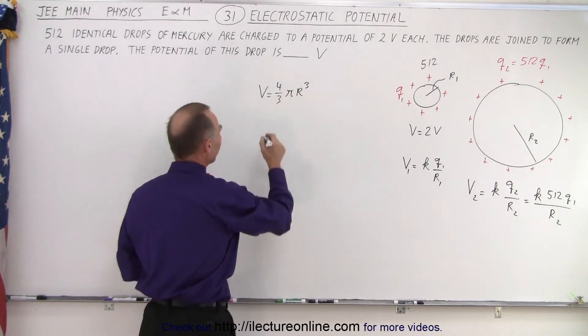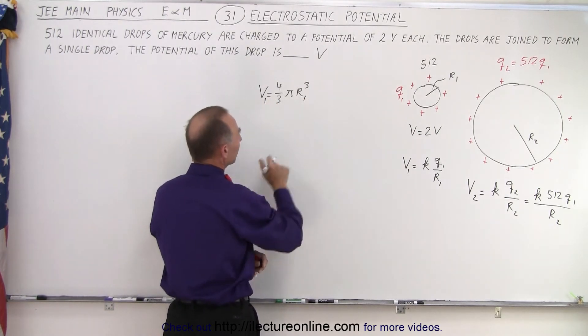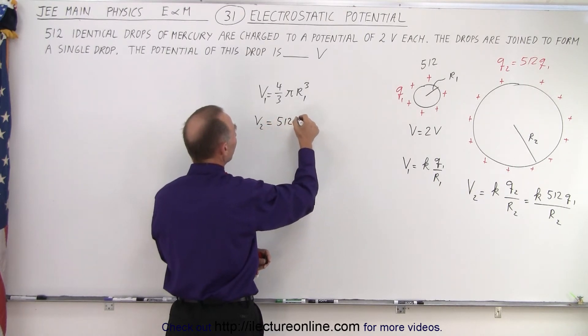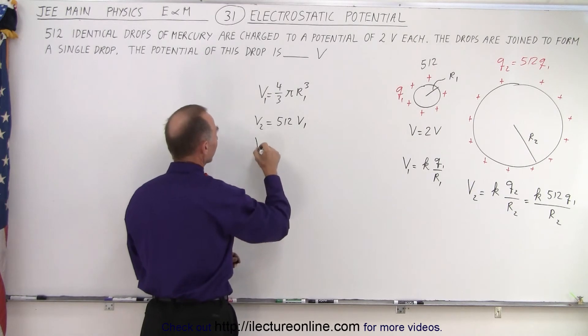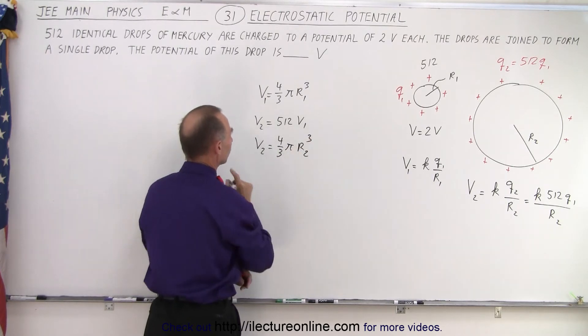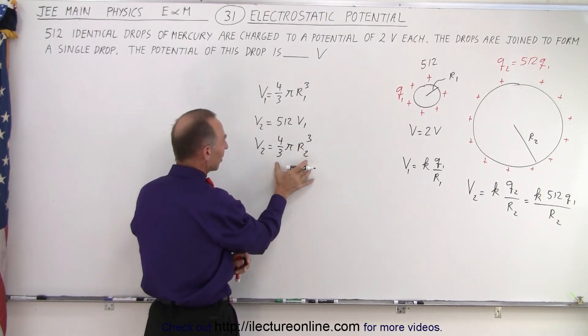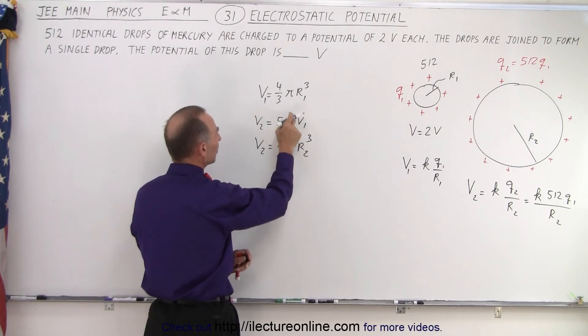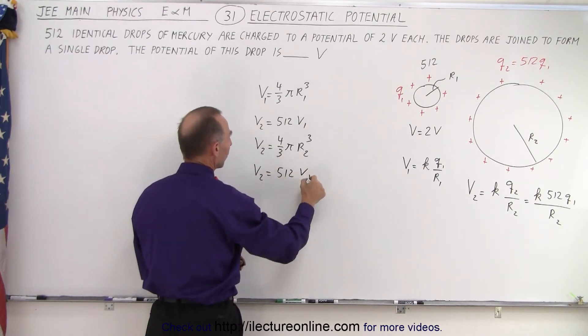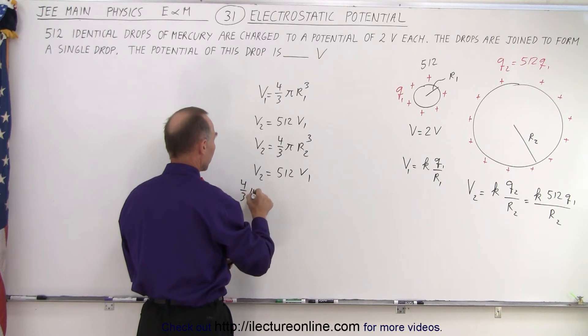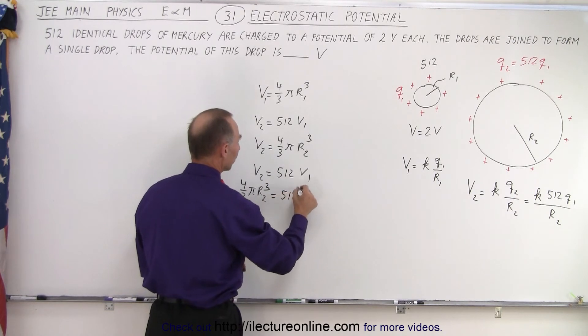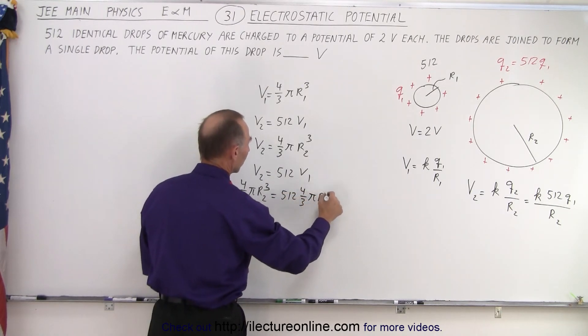Okay, so volume 1 is equal to this because we use R1. How about volume 2? Well, volume 2 is going to be 512 times volume 1. And we know that volume 2 can be defined as 4 thirds pi R2 cubed. So that means we have V2 equals 512 V1. V2 is 4 thirds pi R2 cubed, which is equal to 512 times 4 thirds pi R1 cubed.